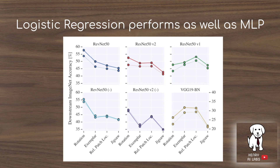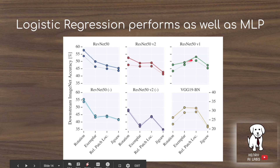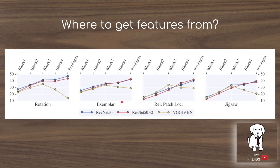One might ask whether using a more complex multi-layer perceptron instead of logistic regression would help. A plot comparing the logistic regression and MLP shows they perform essentially the same, indicating that logistic regression has sufficient capacity for this task. Another interesting question is where in the network to extract features. For VGG-19, taking intermediate features from the third block rather than the very end gives better results, but with ResNet architectures, features taken closer to the output always perform better.